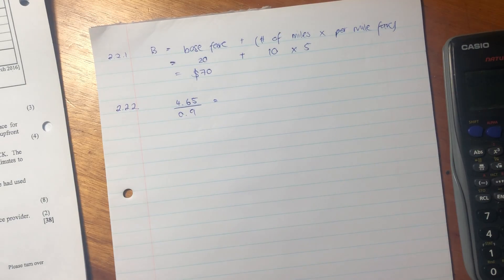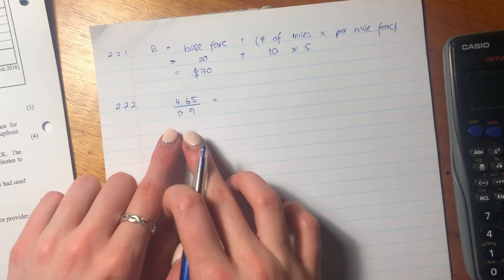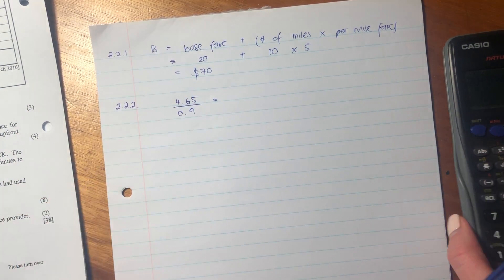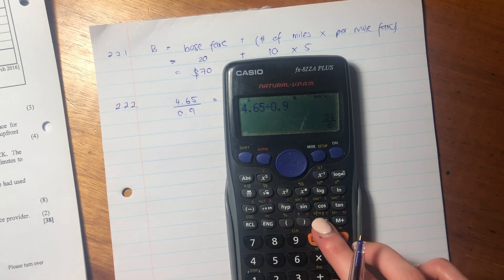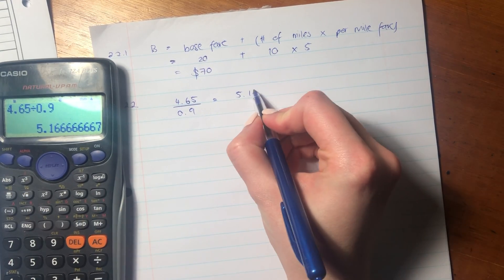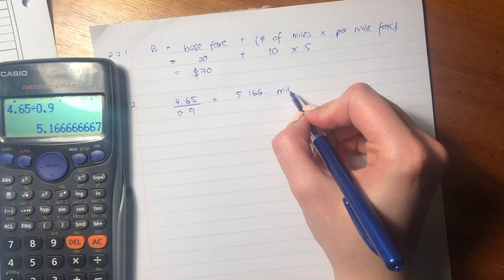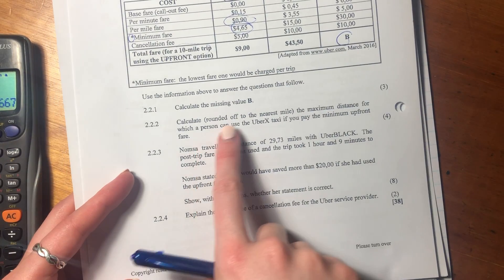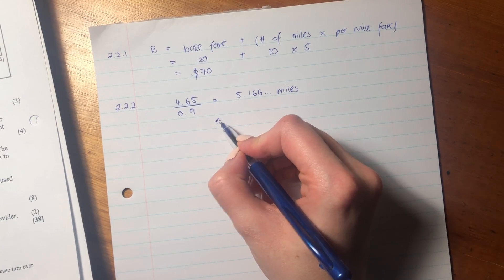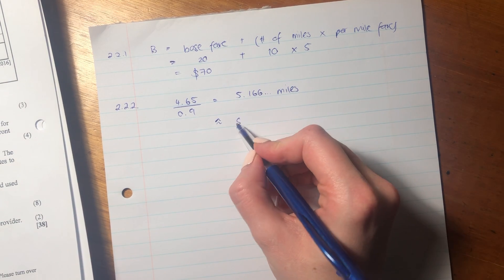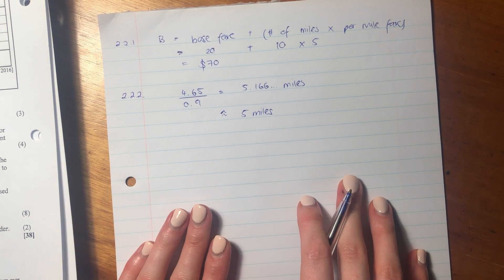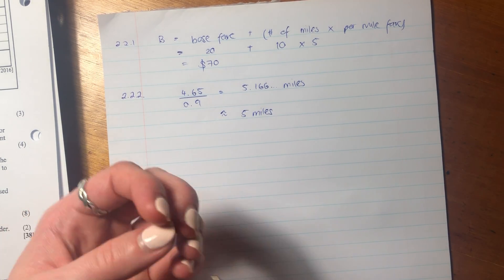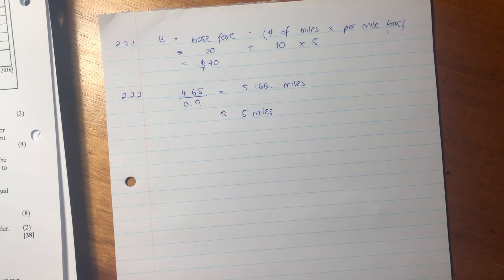Because that will basically tell us how many miles that we can travel given that each mile costs us 0.9, and we can only actually pay up to 4.65. So let's put that into our calculator, and we get 5.166 miles. Now, it's important to read the question and see how they want the answer. It says here, rounded off to the nearest mile. So if we round it off, it's closer to being 5 miles than it is to being 6 miles. So the answer is 5 miles.